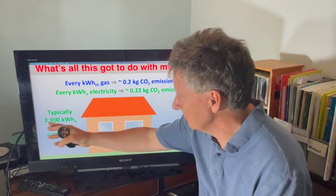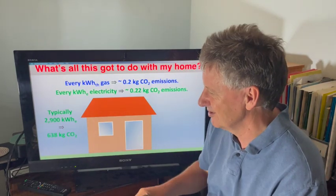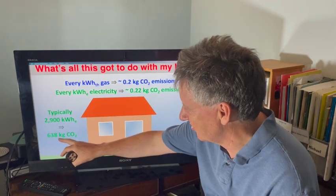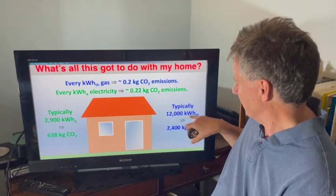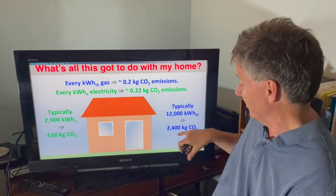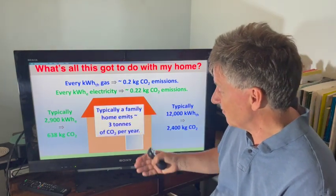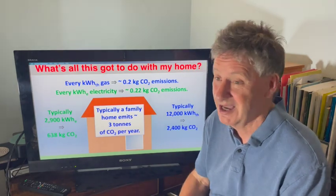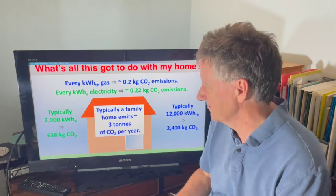Typically we use 2,900 kilowatt hours in a home with two adults. That's 638 kilograms of CO2. And typically we use 12,000 kilowatt hours to heat a home — that's 2,400 kilograms, or 2.4 tons. So typically a family home emits about three tons of carbon dioxide per year. And that's just living our lives — not doing anything exceptional.